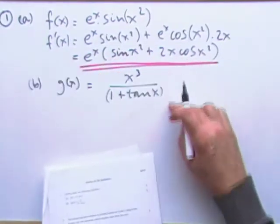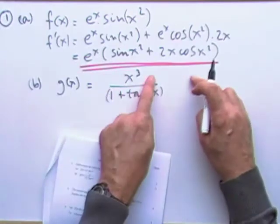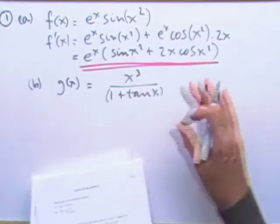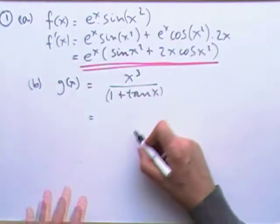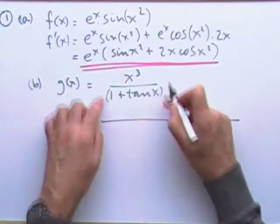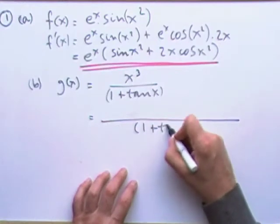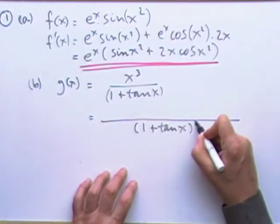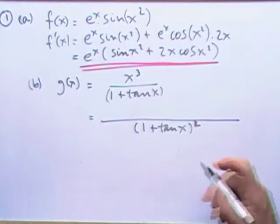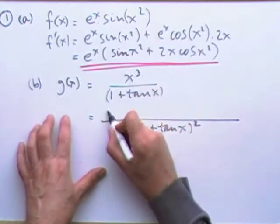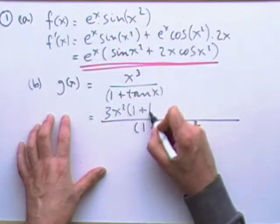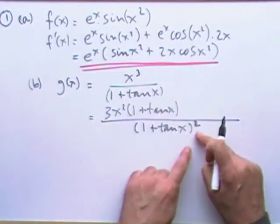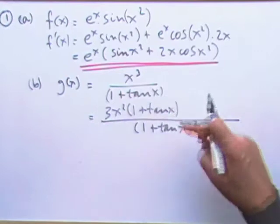So the second one, a quotient, although you could if you wanted take that up power negative one and do it as a product rule again. I'll do it as a quotient. So square the bottom, then it's pretty much as a product rule. Differentiate the one on top, 3x squared, leaving the one below alone, 1 plus tan x.